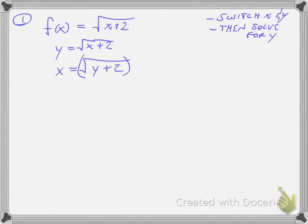Well, to get rid of the square root, I'm going to do the inverse operation, which is to square it. So then I have x squared is equal to y plus two, and then subtract two from both sides, and I'm left with y equals x squared minus two.